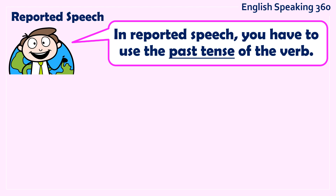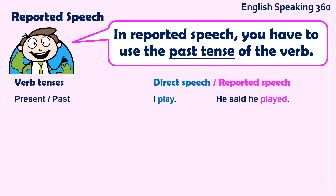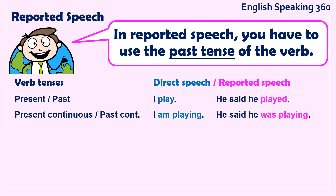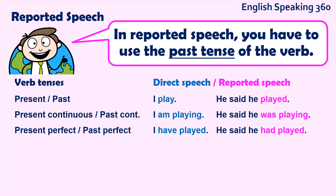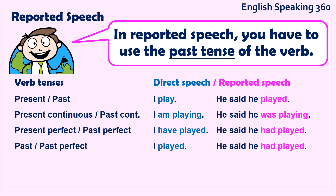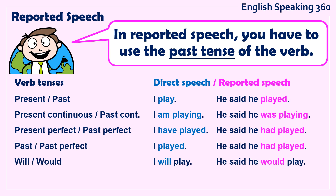Something important to know: in reported speech, you have to use the past tense of the verb. So if in direct speech the person says 'I play,' in reported speech you have to say 'he said he played.' Present continuous becomes past continuous: 'I'm playing' → 'He said he was playing.' 'I have played' → 'He said he had played.' 'I played' → 'He said he had played' — be careful with this one, it's the most difficult. Also, 'will' becomes 'would' and 'can' becomes 'could.' Don't worry — we will practice this together.